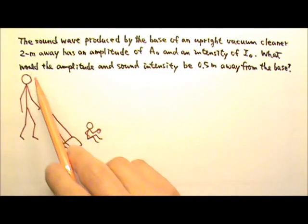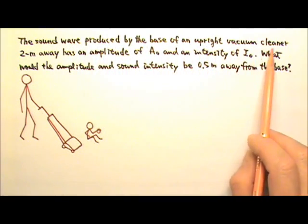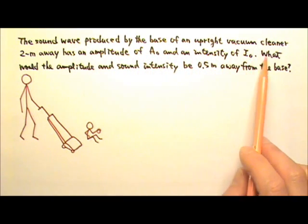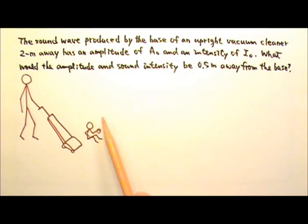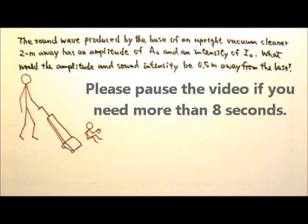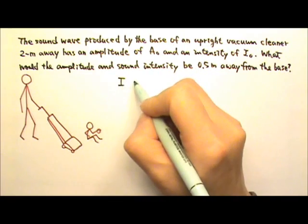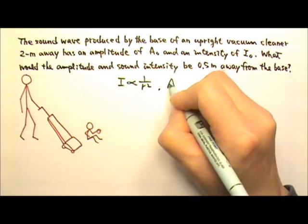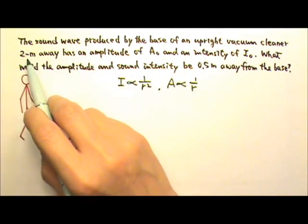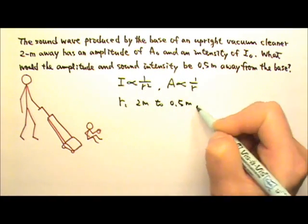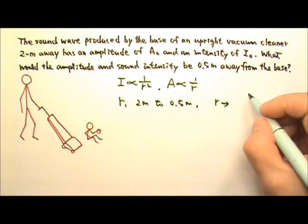Now let's try this problem. The sound wave produced by the base of an upright vacuum cleaner 2 meters away has an amplitude of A₀ and an intensity of I₀. What would the amplitude and sound intensity be 0.5 meters away from the base? We can say that this sound wave is a spherical wave. So the intensity is proportional to 1 over r², and the amplitude is proportional to 1 over r. The distance r changes from 2 meters to 0.5 meters, which means the distance changes by a factor of one fourth.